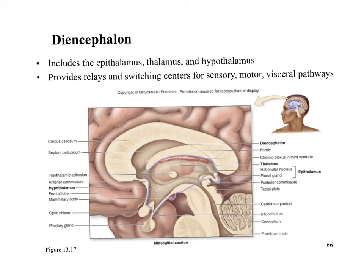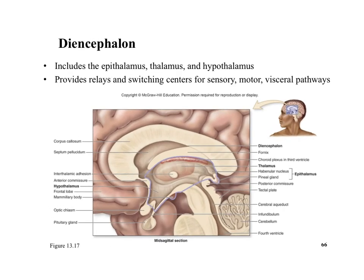The cerebrum is covered by important gray matter. Now let's talk about the other parts of the brain — the diencephalon. The diencephalon includes the epithalamus, the thalamus, and the hypothalamus. This area is deep underneath the cerebrum and not visible from the outside.